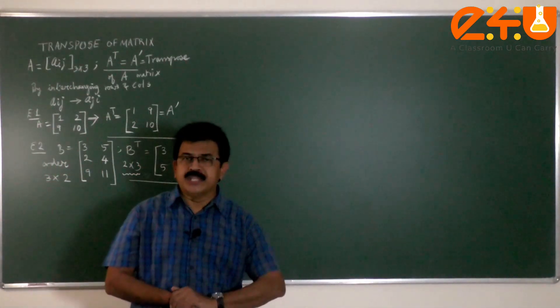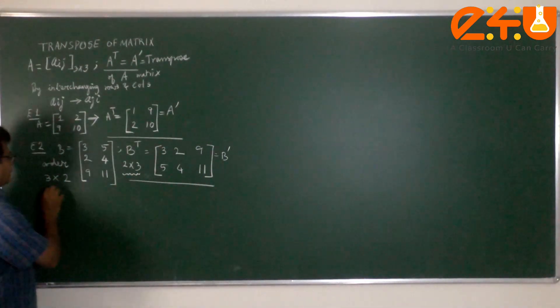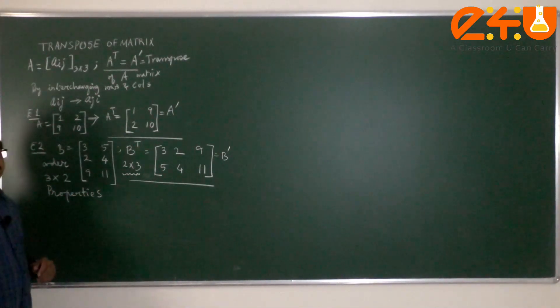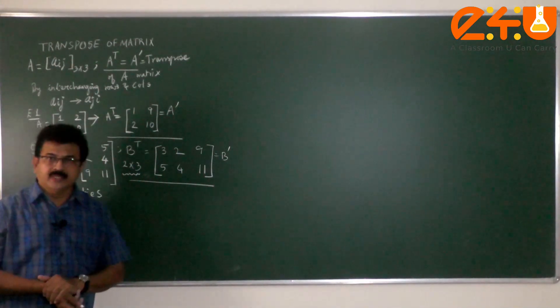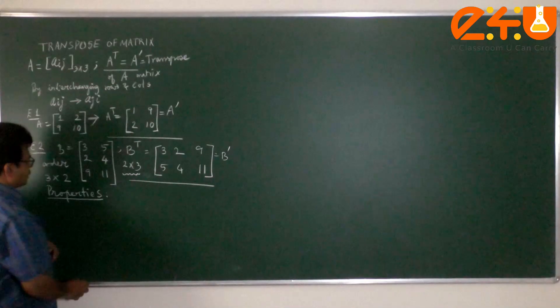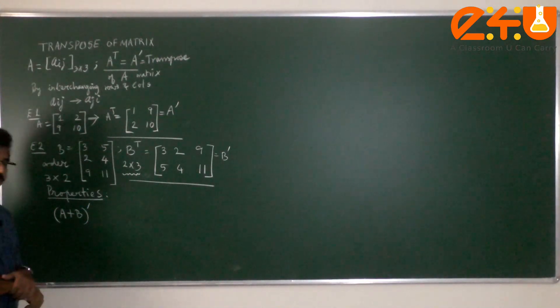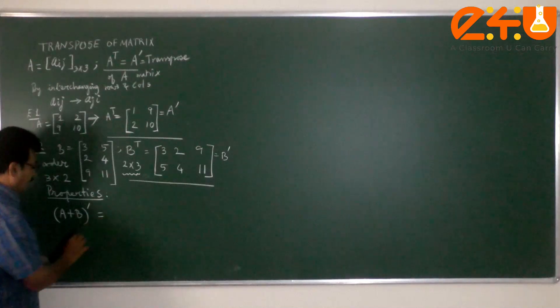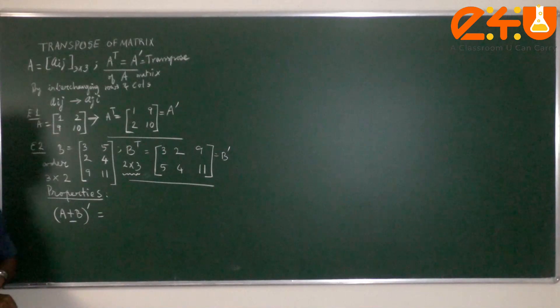Enough of examples. Let me go into the properties of transpose matrix. When I say properties of transpose matrix, how does the transpose matrix behave when two matrices are added or subtracted or multiplied?